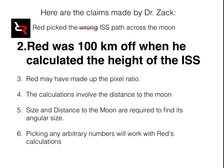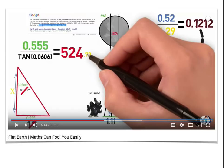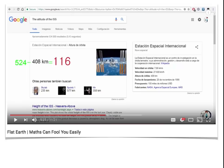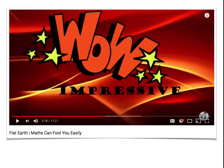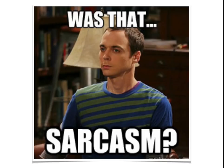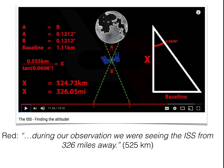Alright, next claim: Red was a hundred kilometers off when calculating the height of the ISS. You did a nice job animating Red's calculation — he found the distance to the ISS was 524 or 525 kilometers, and the actual height of the ISS is 408, so it looks like you're correct, he was a hundred kilometers off. You made a snarky remark about how impressive his calculation was. Looking at Red's video, he says: 'During our observation we were seeing the ISS from 326 miles away' — that works out to about 525 kilometers. Dr. Zack, it looks like you got this one.